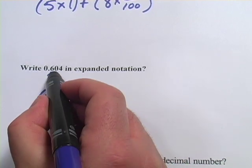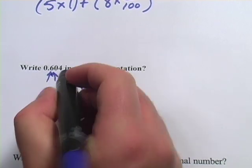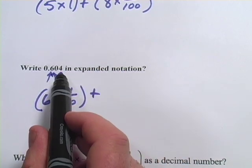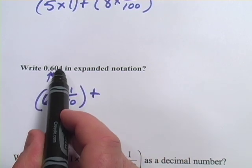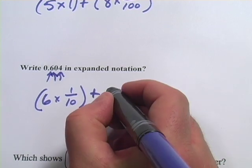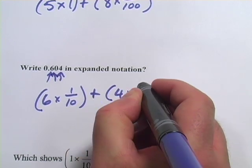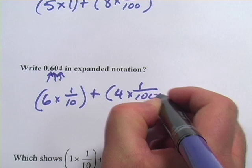Our next one is a 0, so we're going to ignore that. And the last one is a 4, and that's in the thousandths place. Remember, it goes tenths, hundredths, thousandths. So this is going to be 4 times 1 over 1,000.